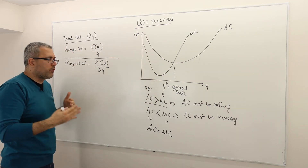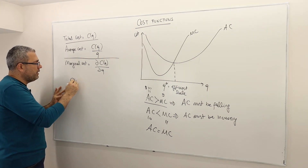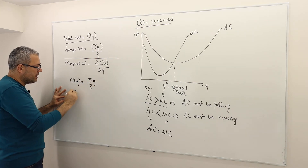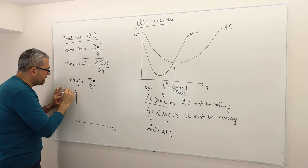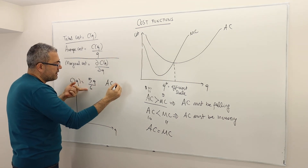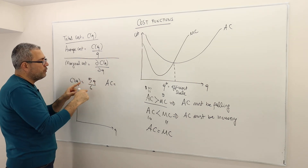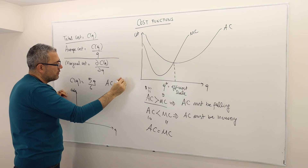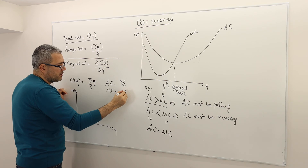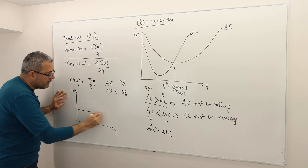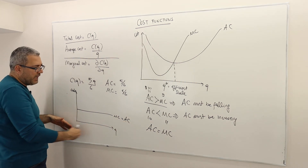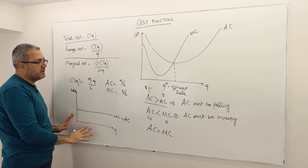Q star — where MC intersects AC — should be at least one of those intersection points. In the previous example, C(Q) = 5Q/6. The average cost is (5Q/6)/Q = 5/6. The marginal cost, which is the slope, is also 5/6. So marginal cost equals average cost throughout — that means any Q is in fact an efficient scale in this example.